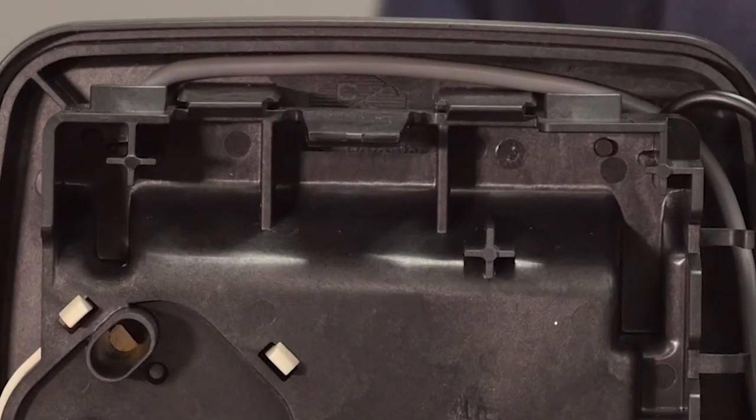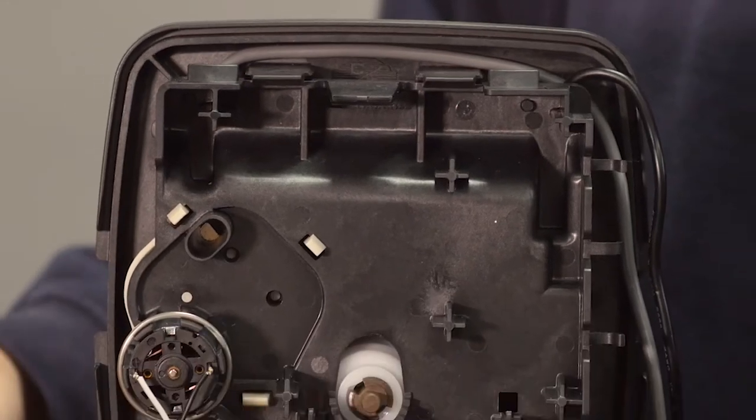To remove the drive bracket, lift the two locking tabs at the top and tilt it forward.